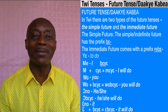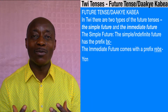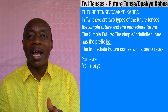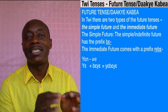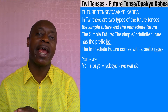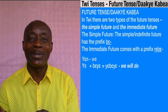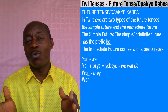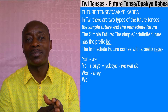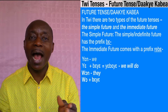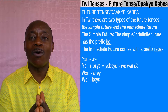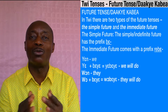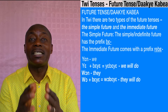Now let's take some of the plural pronouns. Starting with 'yen' (we): 'yen' will lose the 'n,' and if you add 'beye,' you get 'yebeye' — meaning 'we will do.' What about 'won' (they)? 'Won' will always lose the 'n,' giving us 'wo,' and then we add 'beye' to get 'wobeye' — meaning 'they will do.' These are all in simple future tense.